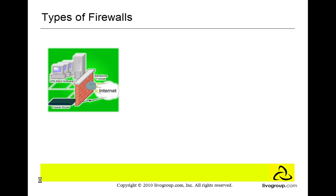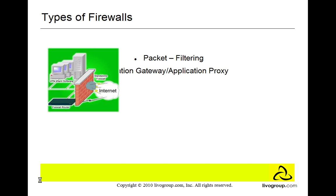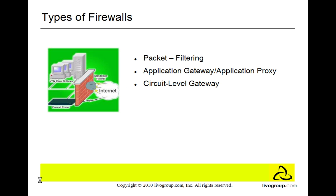The types of firewalls we're going to discuss are packet filtering, application gateway (also known as proxies), circuit level gateway, and stateful inspection.